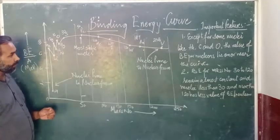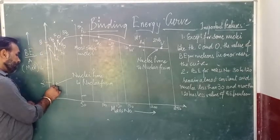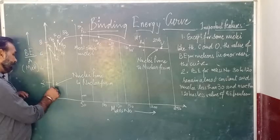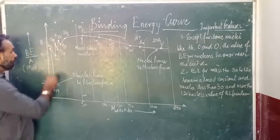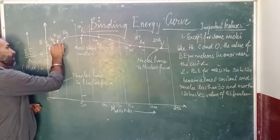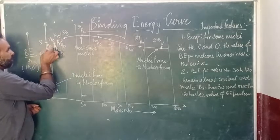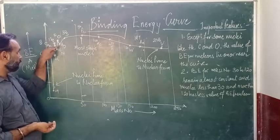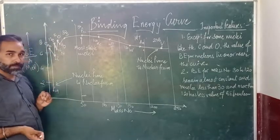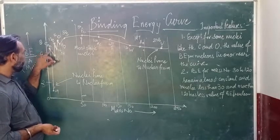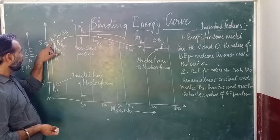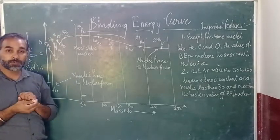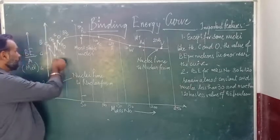Here I will describe briefly about this curve. H-1 is here with the least binding energy per nucleon, and it suddenly rapidly increases for the nucleus. Now you can see some peaks — helium, carbon, oxygen — and some others are lower. If you compare lithium and helium, helium has a higher binding energy level than lithium. If you compare carbon and nitrogen, carbon has a higher binding energy and more stability.